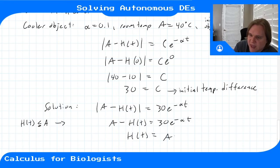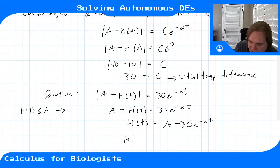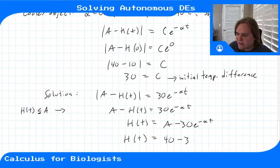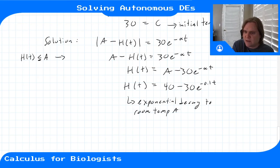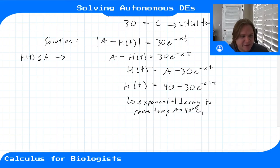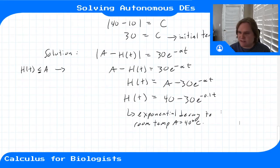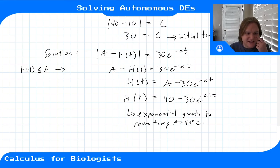So H(t) = a - 30*e^(-alpha*t) = 40 - 30*e^(-0.1t). This is exponential growth to room temperature a = 40°C, because we're subtracting a term that gets smaller and smaller over time. The temperature difference from equilibrium decays to zero.